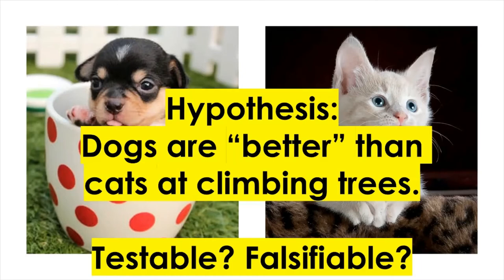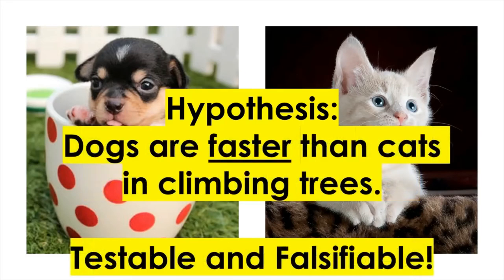Now let's change the hypothesis to say: dogs are better than cats in climbing trees. This sounds more specific because now we know what aspect of the animals we're comparing. However, we need to be more specific about what we mean by 'better.' So the hypothesis is changed to say that dogs are faster than cats in climbing trees. Now we can finally test this hypothesis by measuring how fast they can climb a tree, and after gathering the data, use them to show whether the hypothesis is supported or not.